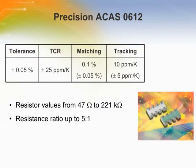The Precision ACAS-0612 series also offers relative parameters with TCR tracking and tolerance matching. The tightest tolerance matching is ±0.05% and the tightest TCR tracking is ±5 parts per million per degree Kelvin. Resistance values offered with this device range from 47 ohms to 221 kilohms with a standard resistance ratio up to 5 to 1.